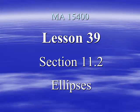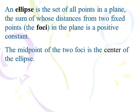Alright, here we go with lesson 39, our second and final lesson on section 11.2, ellipses. And remember, ellipses are a set of all points in a plane, the sum of whose distances from two fixed points in the plane is a positive constant. The midpoint of the two foci is the center of the ellipse.